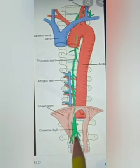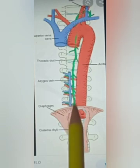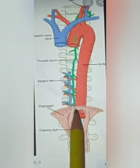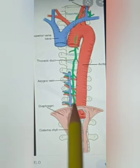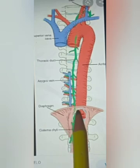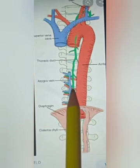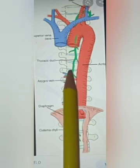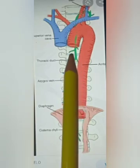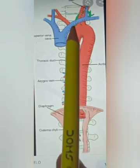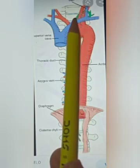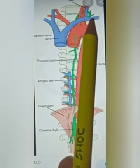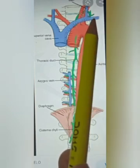All the lymph collected in the cisterna chyli is transported into the thoracic duct, which passes through the aortic opening of the diaphragm. The length of the thoracic duct is about 38 to 44 cm. It passes into the posterior mediastinum, then the superior mediastinum, ascending to the right of the vertebral column up to the level of the clavicle. At the level of the clavicle, it descends and opens into the junction of the subclavian and the internal jugular vein.